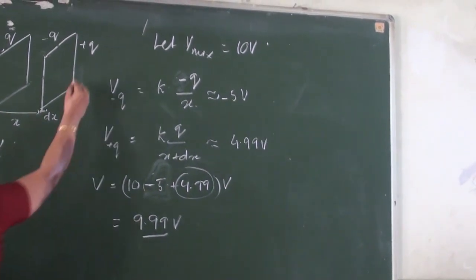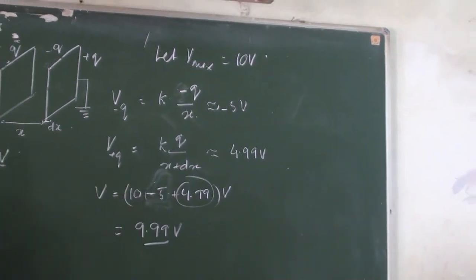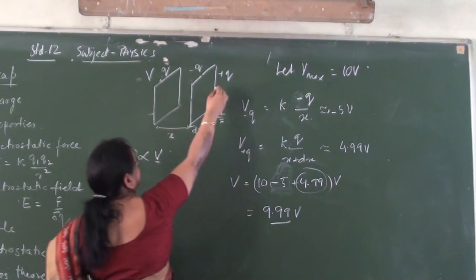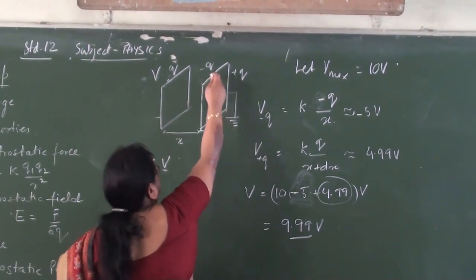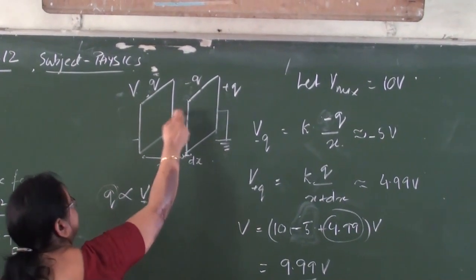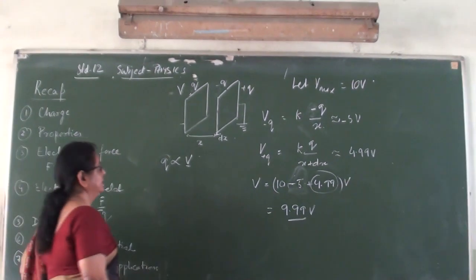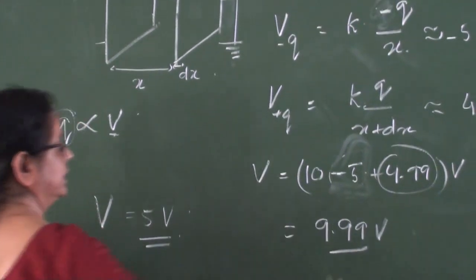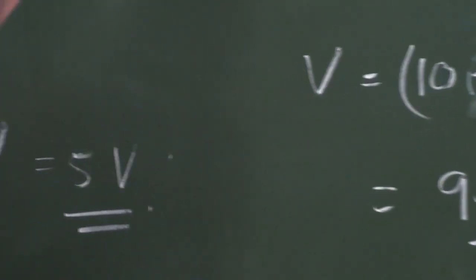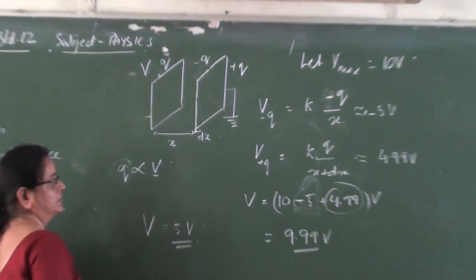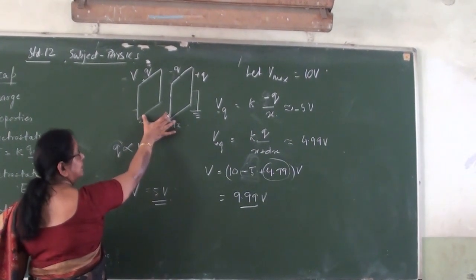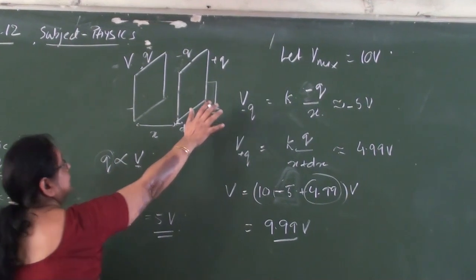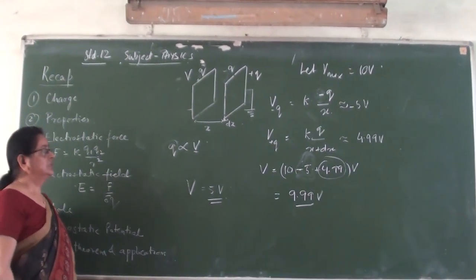So what to do? We earth this conductor. As soon as you earth this conductor, the positive induced charges, being repelled, find a way out and get neutralized. The negative induced charge remains on the surface due to the strong electrostatic force of attraction. Once you earth this part, the potential of the first conductor is reduced to about 5 volt, and to raise it back to 10 volt we can give an enormous amount of charge. Hence, the charge-storing capacity of this arrangement is very high.